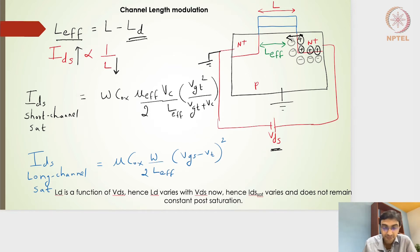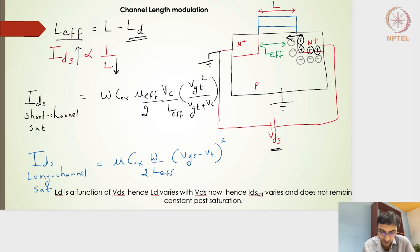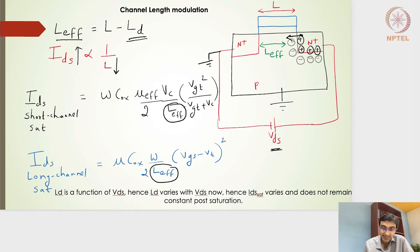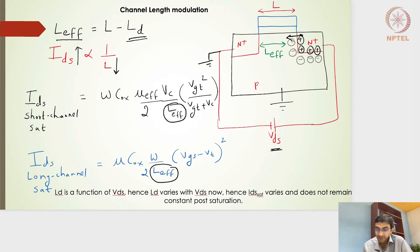As the effective channel length decreases, the drain current IDS — which is a function of 1/L — increases. Whether we take the long channel or short channel current expression, the channel length appears in the denominator. As the effective channel length decreases due to higher drain potential, LD increases, L_effective decreases, and thereby the current increases. So LD is a function of VDS, and hence ID varies with VDS.